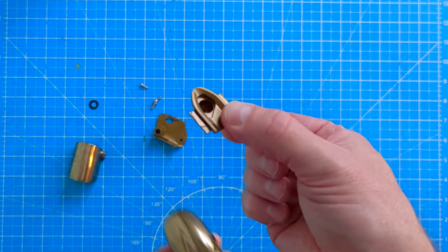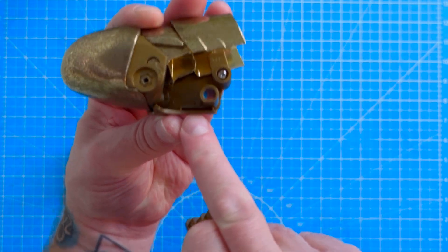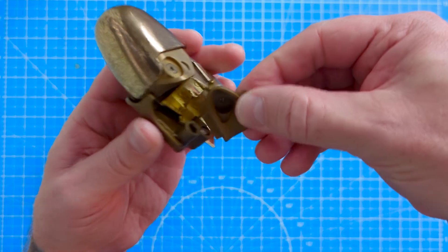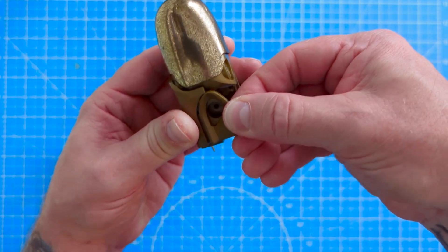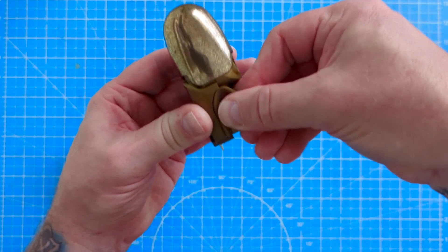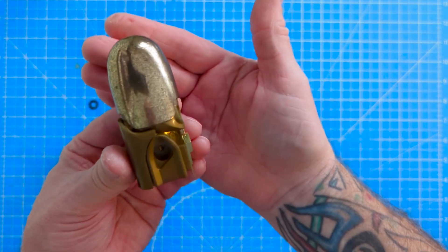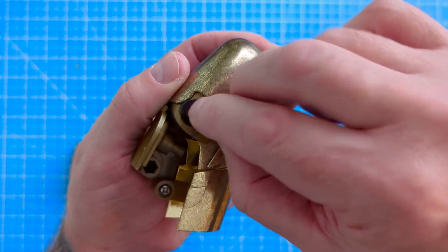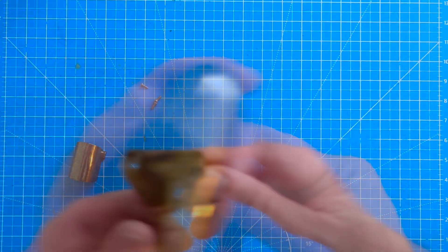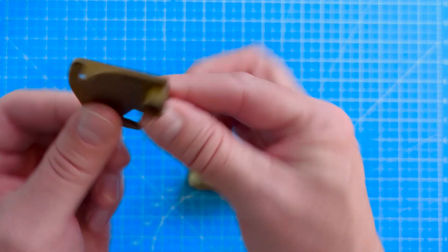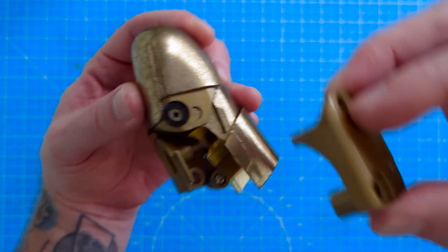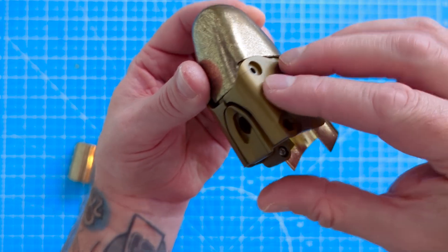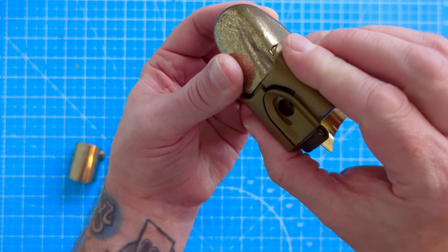First thing we're going to do is we're going to take this bit and we're just going to push it into that slot just there like so. That's going to look like that. Then our washer is going to go over that section just there and then we're going to take this piece and it's going to go over the finger just like that. Push all that together.